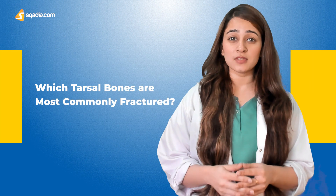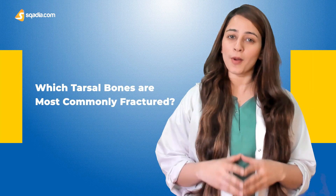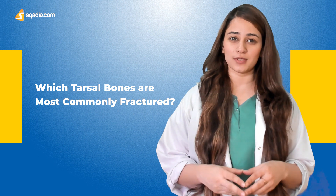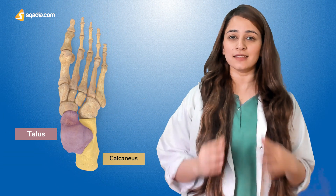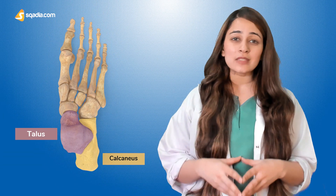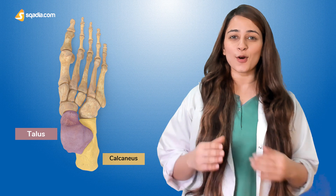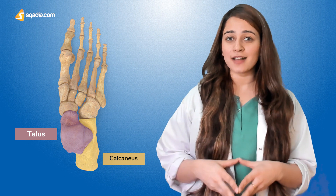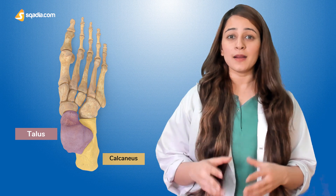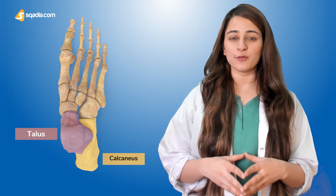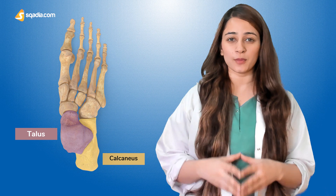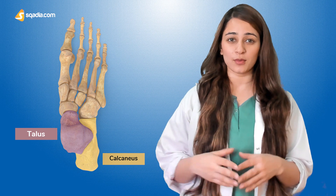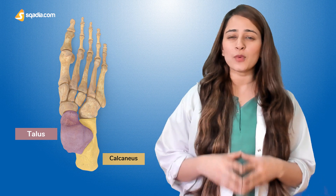Which tarsal bones are most commonly fractured? The talus and the calcaneus lie in the proximal part of the foot and ankle and are majorly involved in transmitting the weight of the body to the ground, so they are the most frequently fractured of all the tarsal bones.